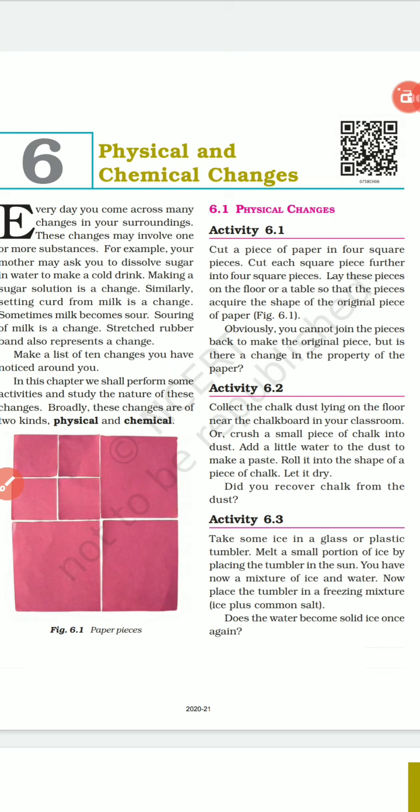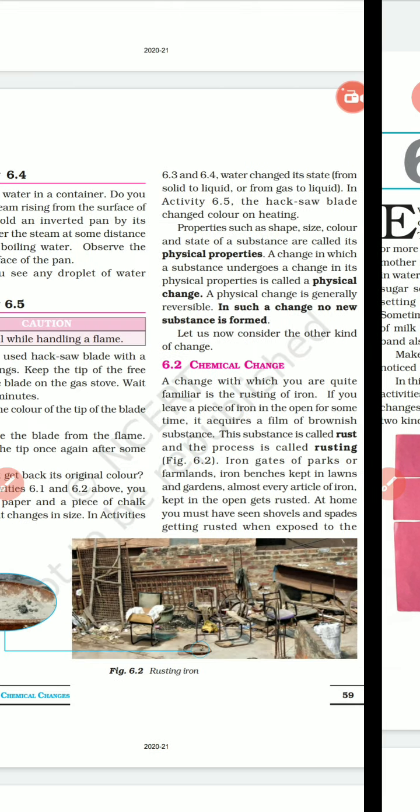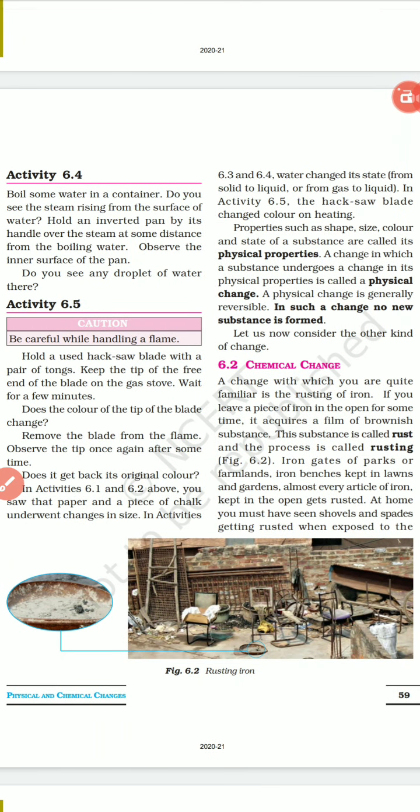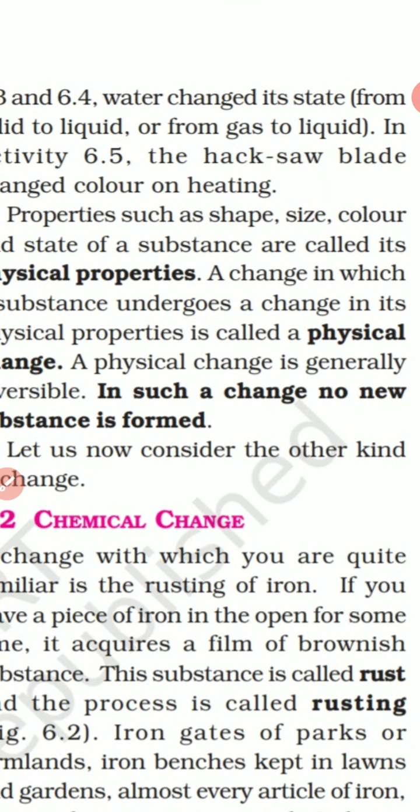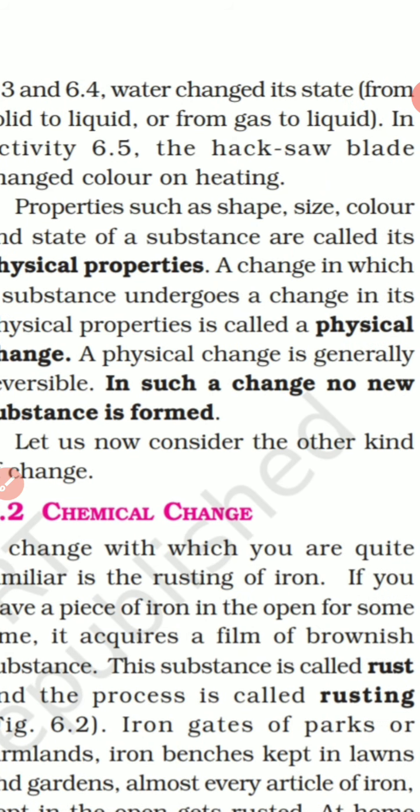Here no new substance is formed and generally a physical change is reversible. Reversible means you can again reverse the effect and bring the substance in its original state. The properties like shape and size are called physical properties, and a change which occurs in these physical properties is called physical change.